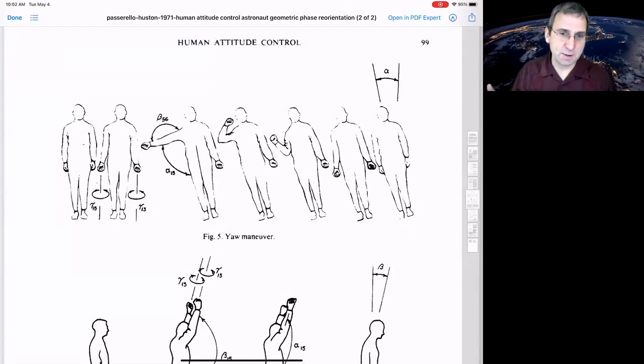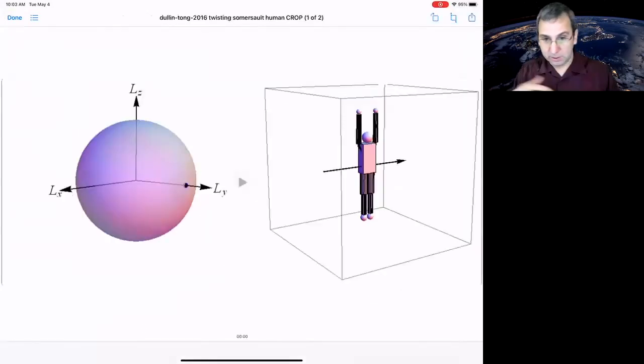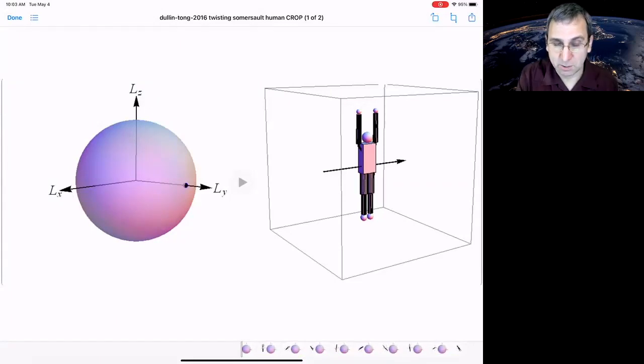You don't need to do this out in space. You could do this if you were to jump off the high dive. People do flips and things. This sphere on the left, they're calling it L, but this is the same as what we've called H, the angular momentum sphere.